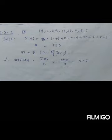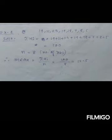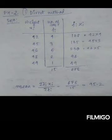Now I'll solve the examples. Example 1 falls under the category of ungrouped data. To find mean, we simply add up all the numbers and divide by eight — because counting the numbers (14, 11, 23, 14, 18, 7, 8, 5) gives us eight numbers altogether. After that, it's just calculation to find the answer.